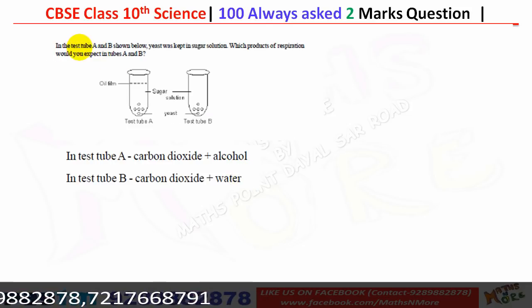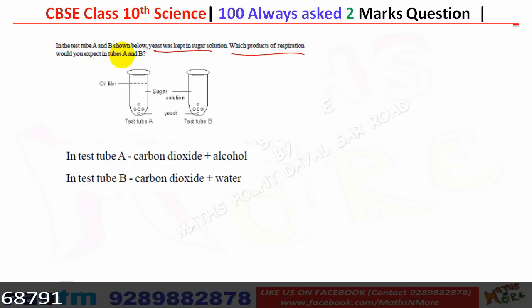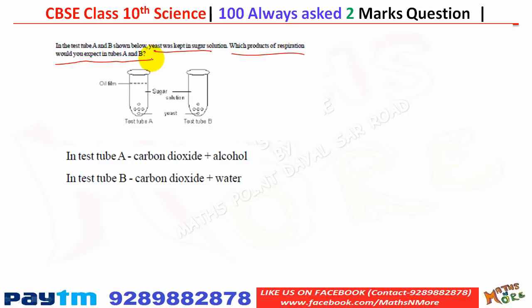Yeast was kept in sugar solution in test tube A and test tube B. In test tube A, the products of respiration expected are carbon dioxide plus alcohol. In test tube B, the products expected are carbon dioxide plus water.